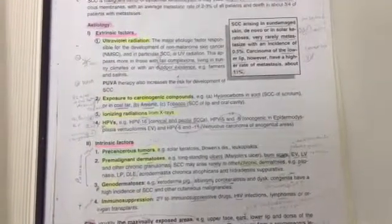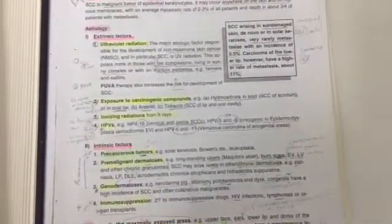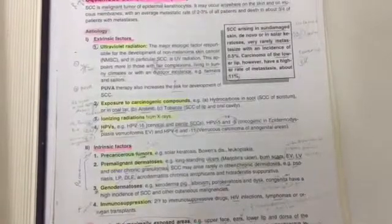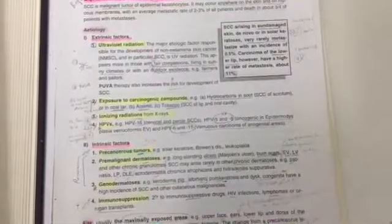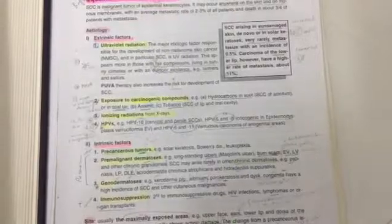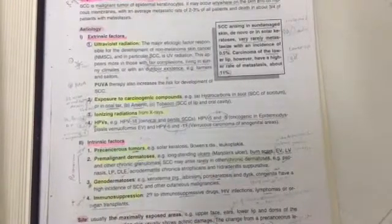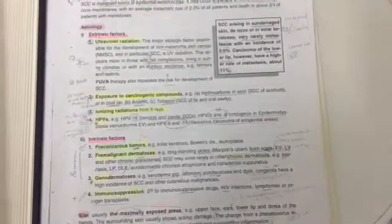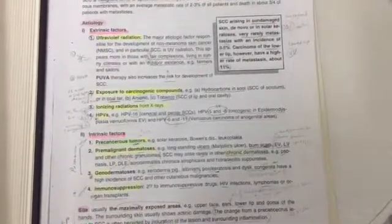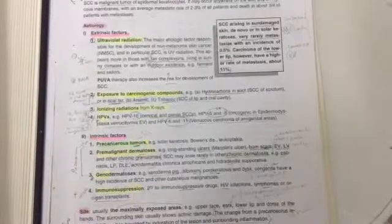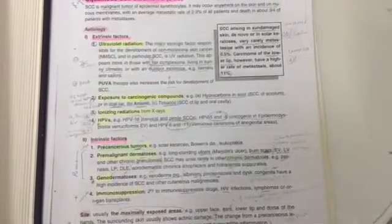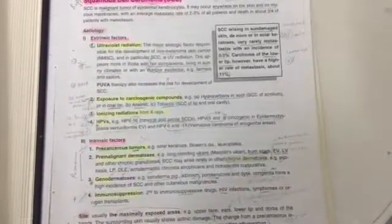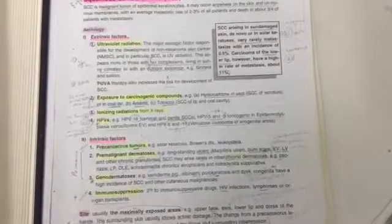The extrinsic factors: first, ultraviolet radiation, either by sun exposure, especially in fair complexions and those with outdoor exposure such as farmers and sailors, who show a high rate of development of squamous cell carcinoma.